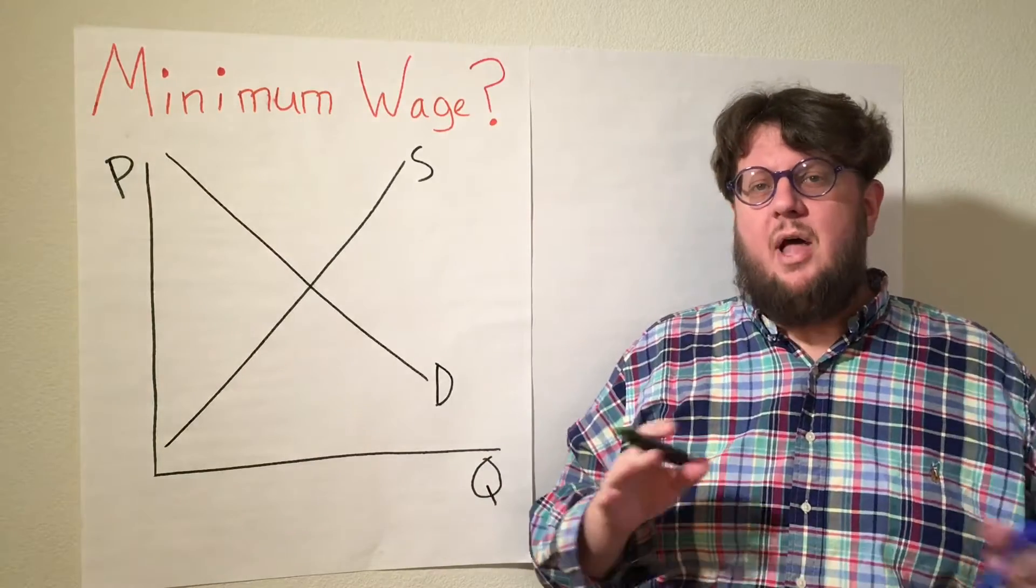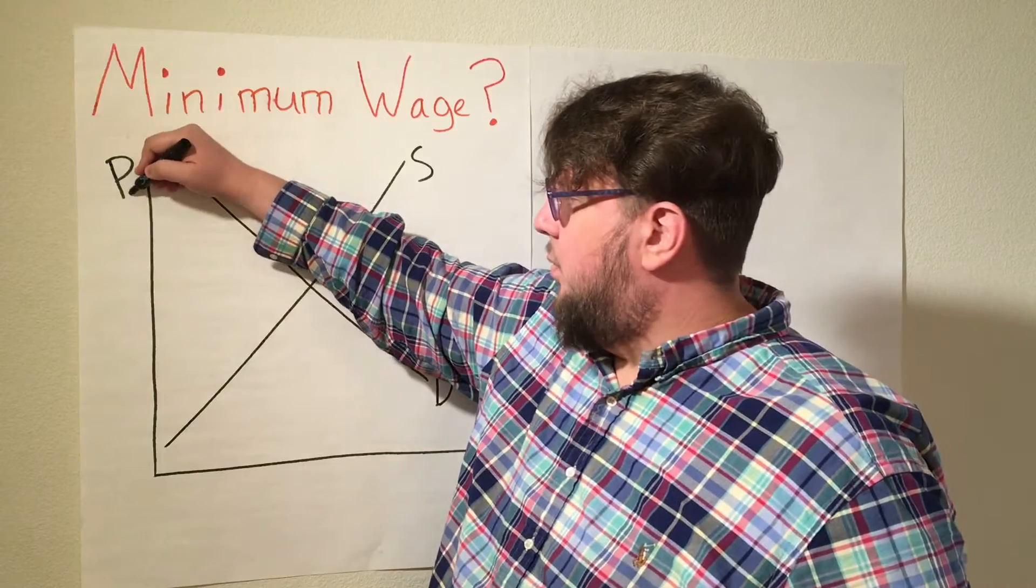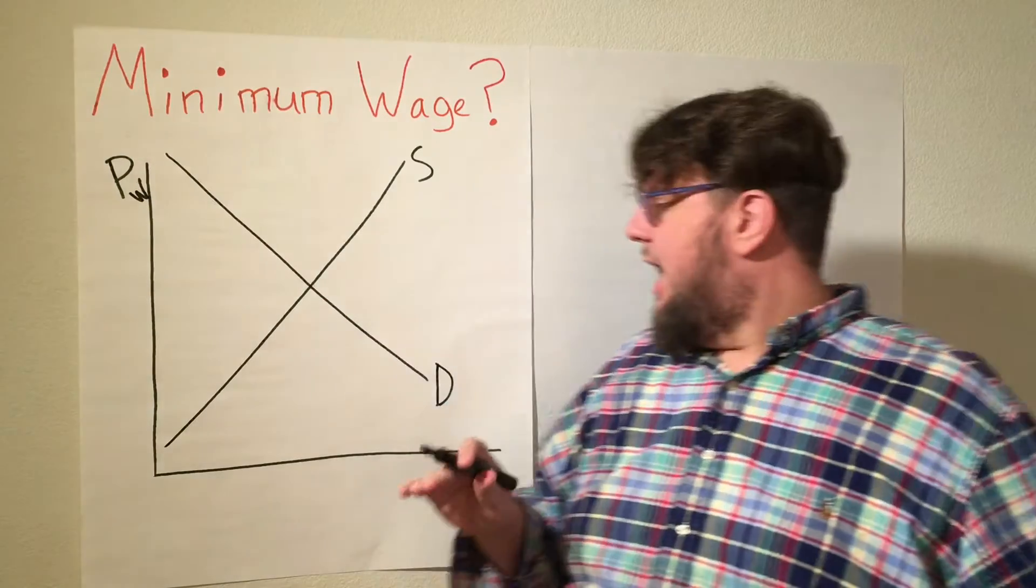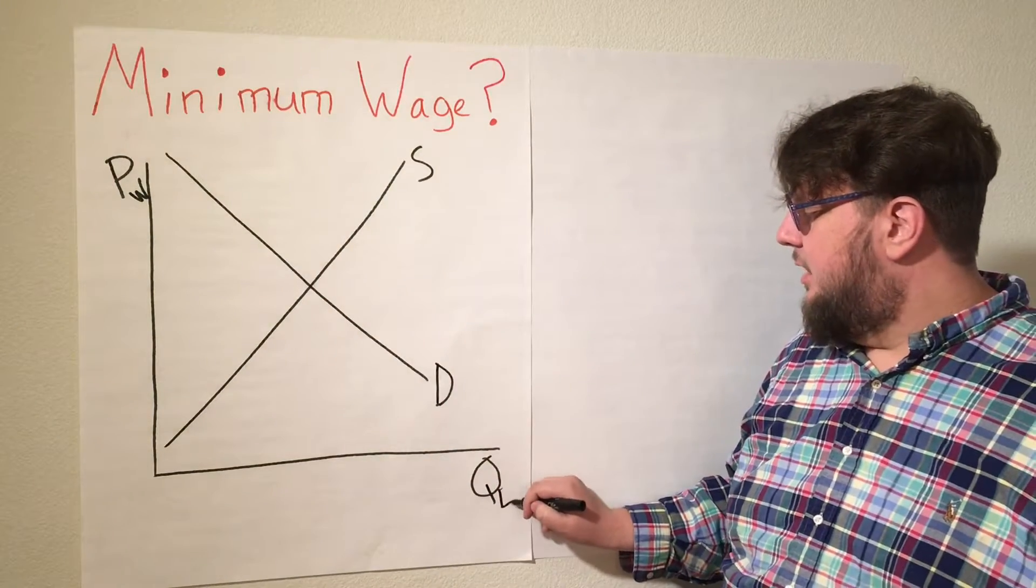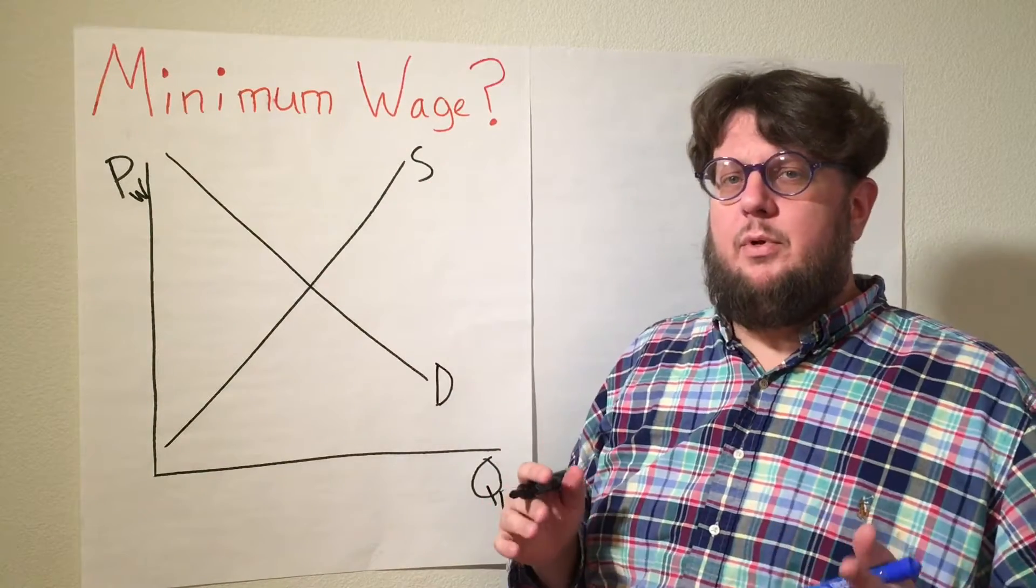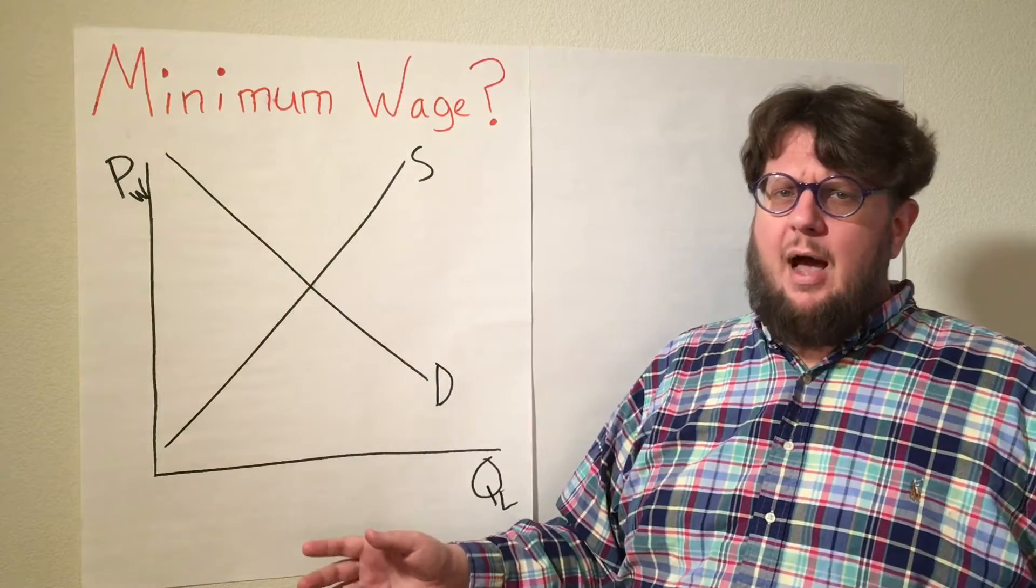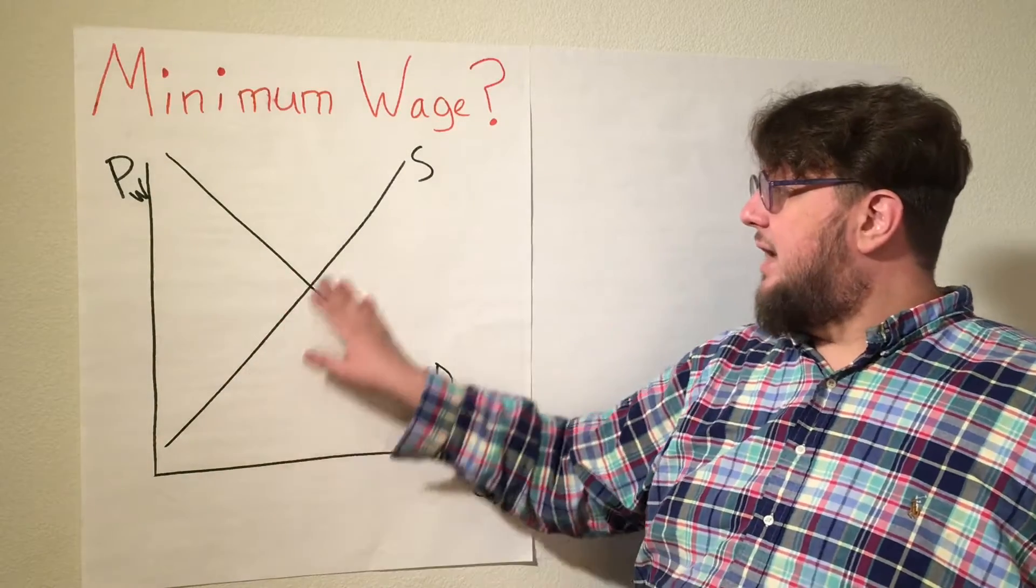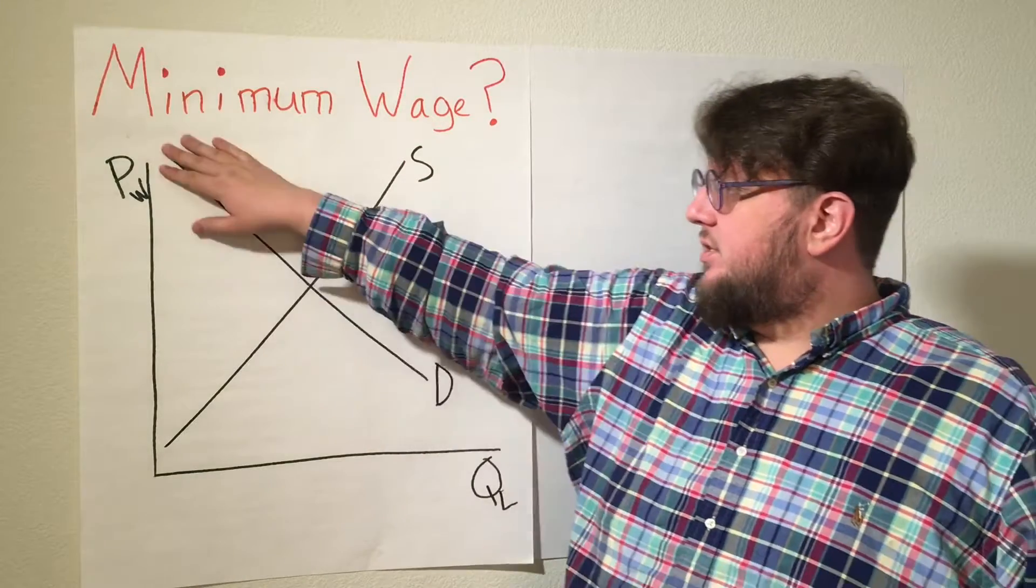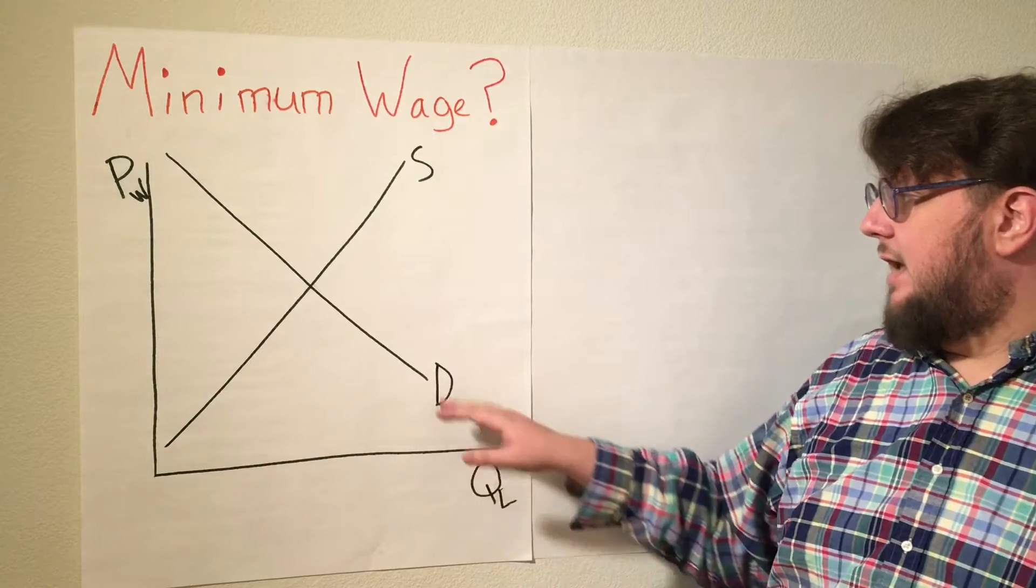Let's start out with a standard supply and demand graph. Up here, we have the price of wages, the wage rate. And we have the quantity of labor down here on our x-axis. We have the supply curve, how much labor will be supplied. And as prices go up or as quantities higher, the supply is going to be higher. And as prices are higher, those who hire workers demand less and they demand more at lower prices.